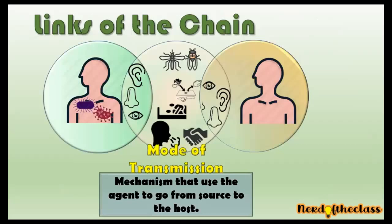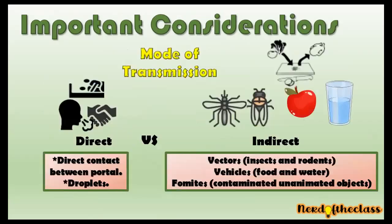The mode of transmission is the mechanism that the agent uses to go from source to host. This could be direct and indirect. The direct mode uses direct contact — for example, in sexual intercourse.